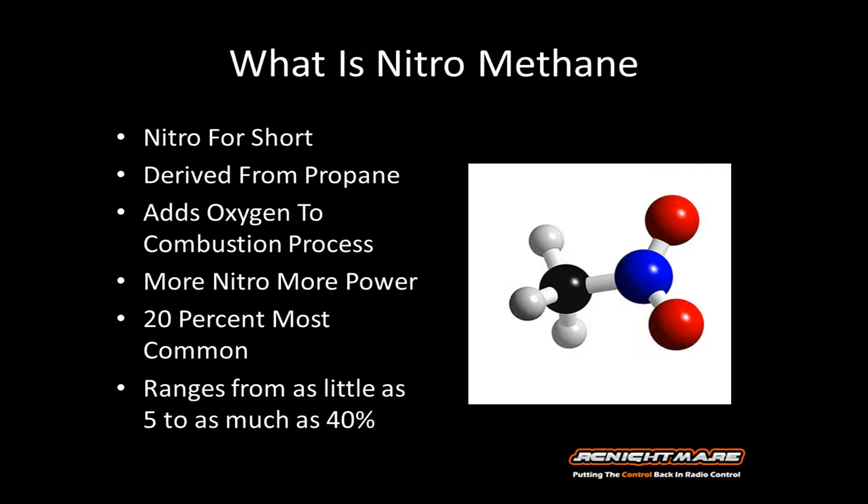So what is nitromethane specifically? It's known as nitro for short. It's derived from propane, and what it does is it brings along with it extra oxygen to the combustion process. So the more nitro percentage you have, generally the more power. The most common nitro percentage that people use is 20%, but it can range from as little as 5% for some large aircraft to as much as 40% for people who use it at the racetrack.